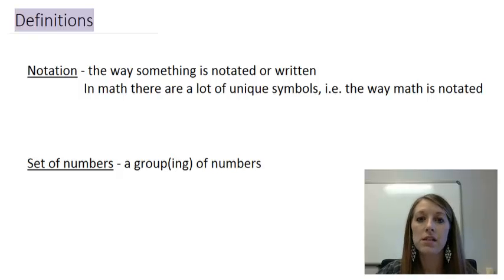In math we see lots of unique symbols and that always goes back to the way that it's notated. Sometimes you might see me write great idea but bad notation. That means you're probably thinking the right thing but you've just written it incorrectly. The other thing I need to define is a set. A set of numbers is a group or some grouping of numbers.